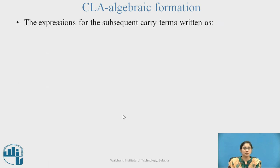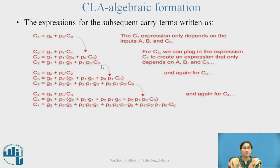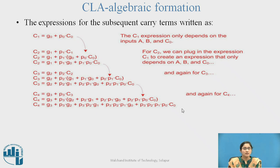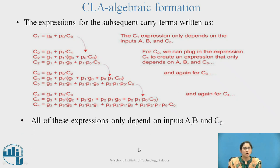CLA Algebraic Formation: The expression for the subsequent carry terms is written as: C1 = g0 + p0·C0. The C1 expression only depends on inputs A, B, and C0. For C2, we can substitute the expression for C1 to create an expression that only depends on A, B, and C0 — replacing C1 with (g0 + p0·C0). Similarly, we can derive C4. All of these expressions only depend on inputs A, B, and C0.